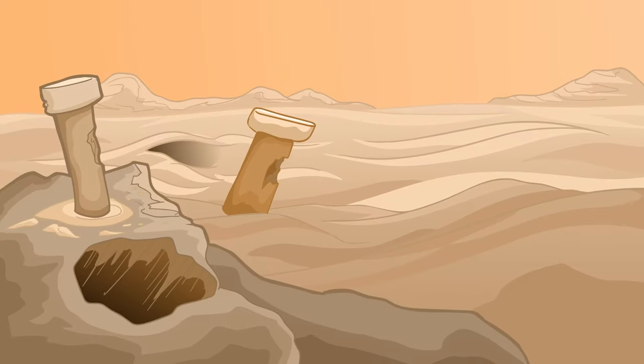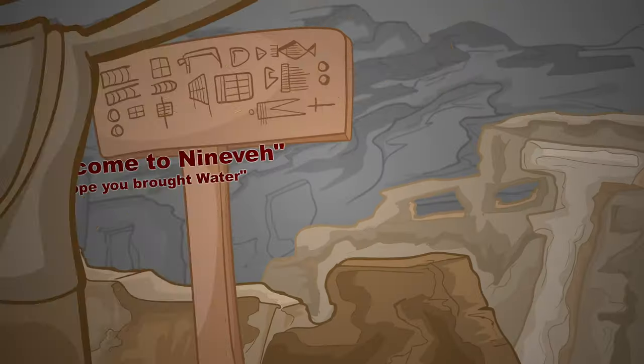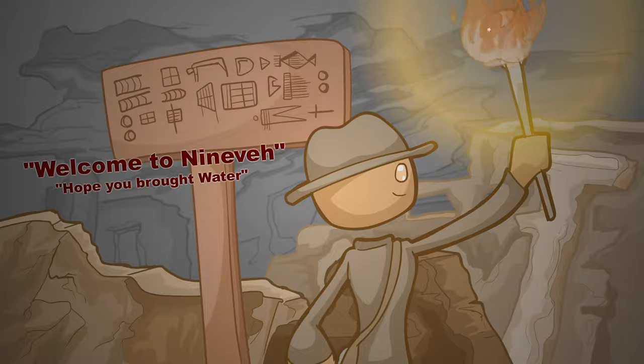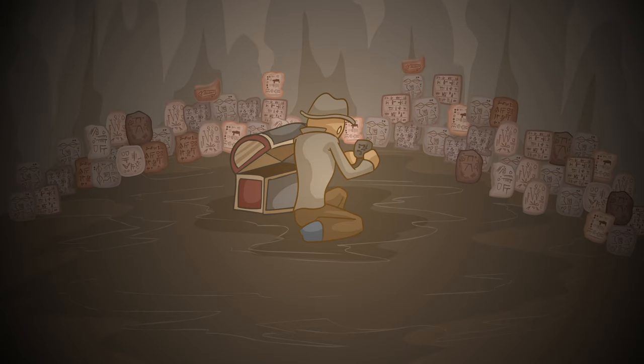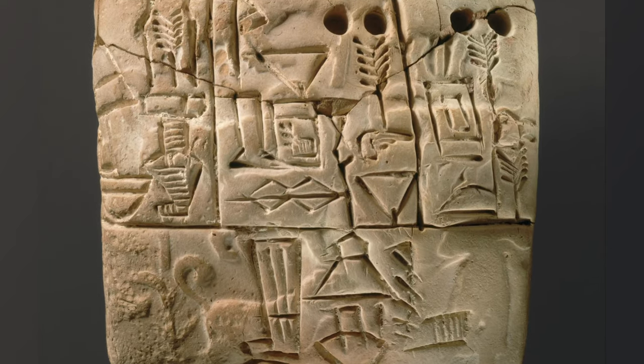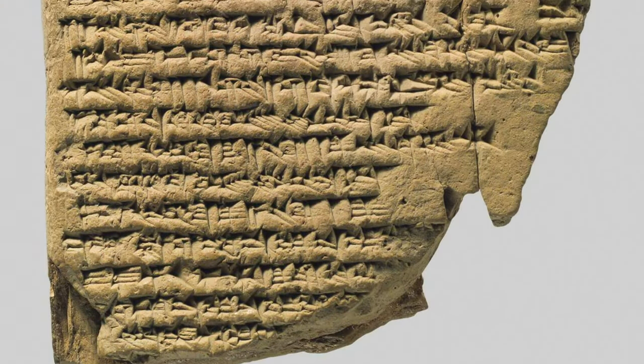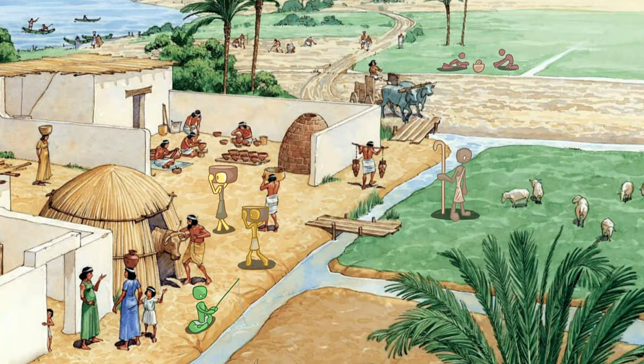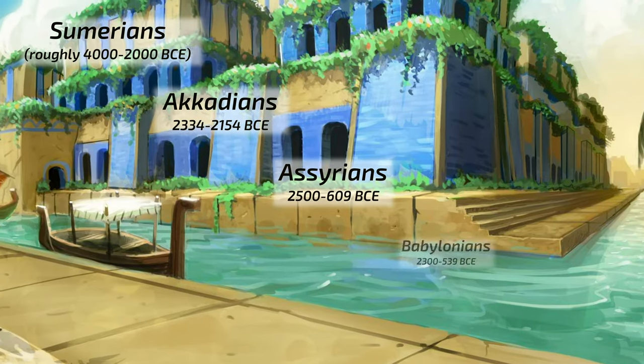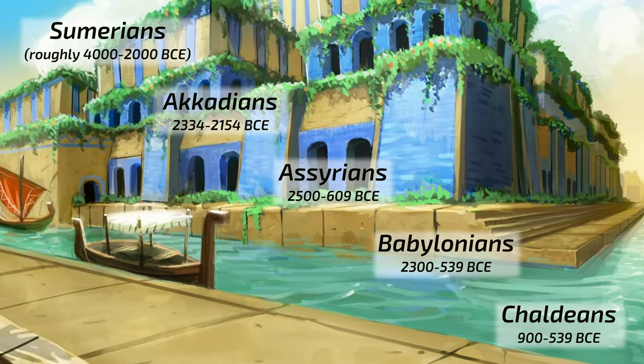In 1874, an archaeologist named Austin Henry Layard found 22,000 clay tablets hidden in the depths of an ancient city in modern-day Iraq. These tablets contain tons of information about what is often considered the first civilization of humanity, the Sumerians, and the civilizations that followed, the Assyrians and the Babylonians.